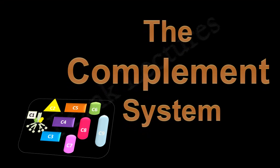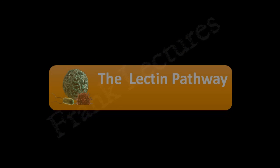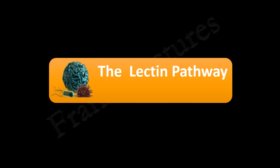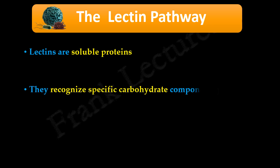The complement system — the lectin pathway. Lectins are soluble proteins mainly produced by the liver. Lectins recognize specific carbohydrate components present on microbial surfaces.